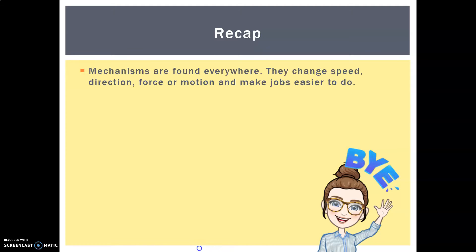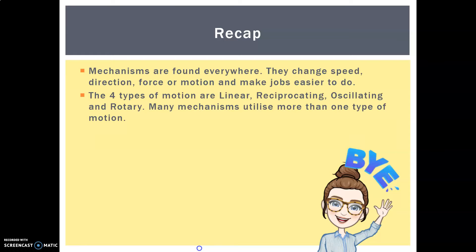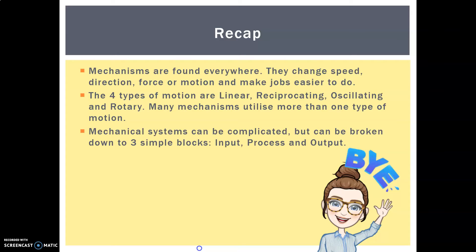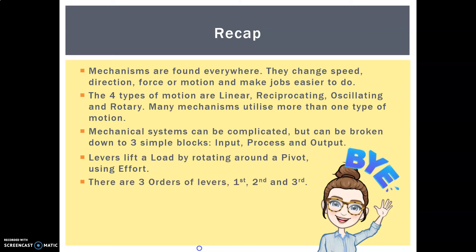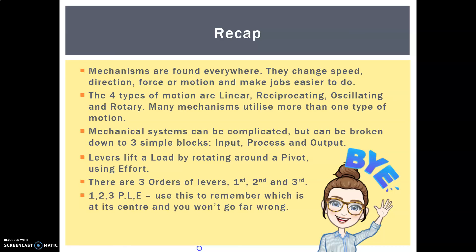So what have we learned today? Mechanisms are found everywhere — they change speed, direction, force and motion to make jobs easier to do. The four types of motion are linear, reciprocating, oscillating and rotary, and many mechanisms utilise more than one. Mechanical systems can be broken down to input, process and output. Levers lift a load by rotating around a pivot using effort. And we think about the three orders of levers — first, second and third — by using one, two, three, P-L-E. Good job, well done everyone!